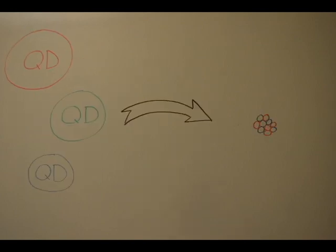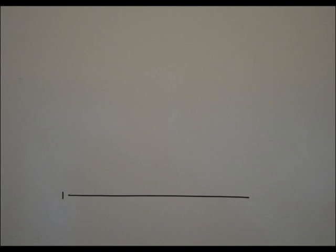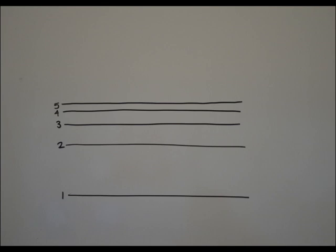Quantum dots act a lot like atoms because they're so small. Their electrons are contained within energy levels. Energy levels get closer together as they increase. Each energy level can hold only a certain number of electrons.